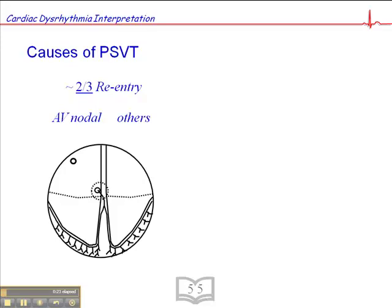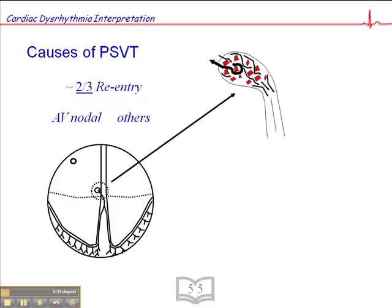Let's talk about re-entry and what happens at the AV node, or the AV junction, the perinodal tissue. If we look at this area of the heart more closely, you'll recall from an earlier presentation that the AV node is composed of different areas — drawn here in red — of non-conductive tissue within the AV node. When a wave of depolarization hits the AV node, it has to weave its way around these areas of non-conductive tissue.